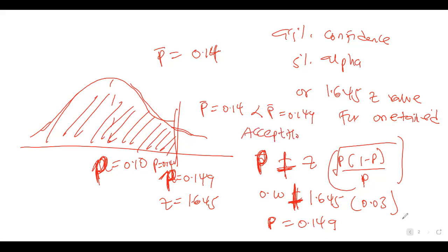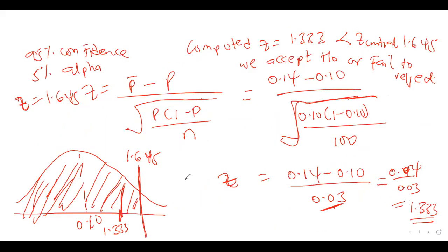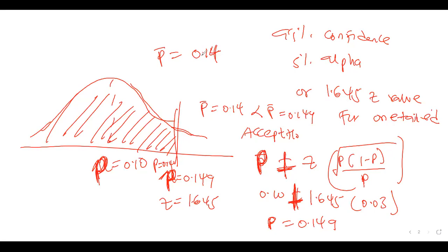To use the z-value approach, we convert proportion values to z-values. A z-value of 1.645 corresponds to a proportion of 0.149. Since the computed z is 1.333 — less than the critical z of 1.645 — we accept. Equivalently, the sample proportion of 0.14 is less than the critical proportion of 0.149, so it falls within the acceptance region.